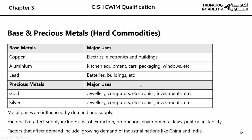Now let's look at hard commodities, which are metals — base metals or precious metals. Metals are divided into base metals, which are cheap, and precious metals, which are expensive. Precious metals are gold and silver. Base metals include copper, aluminum, lead, zinc, and tin — these are the cheap metals.